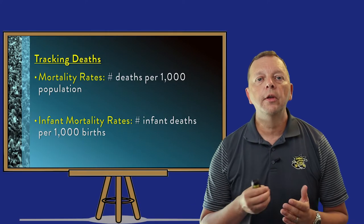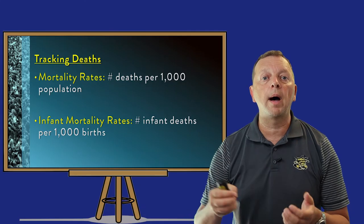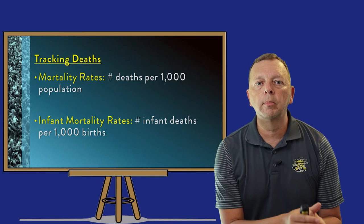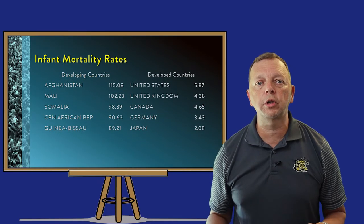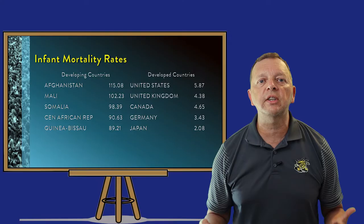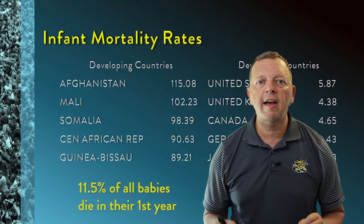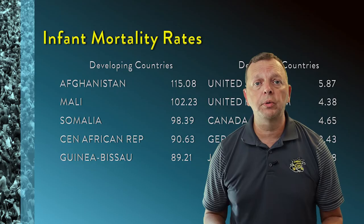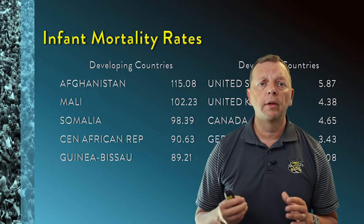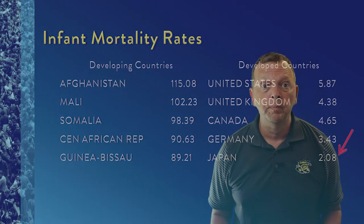Infant mortality rate tracks the number of babies who die before their first birthday. Unlike mortality rates and birth rates, which are per 1,000 population, infant mortality rate is the number of children who die before their first birthday for every 1,000 births. Afghanistan has an infant mortality rate of just about 115, meaning 11.5% of all children born will die before their first birthday. This is in stark contrast to developed countries such as the United States, which has an infant mortality rate under 6, or Japan with an infant mortality rate of just about 2.